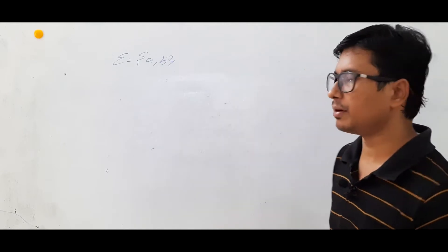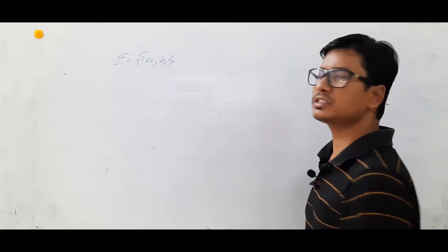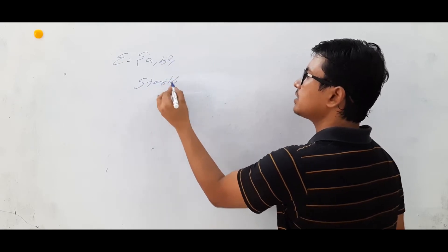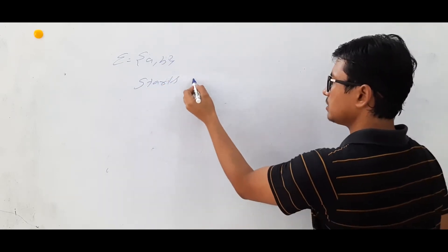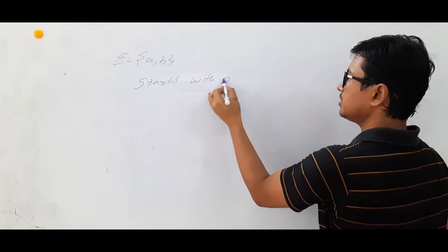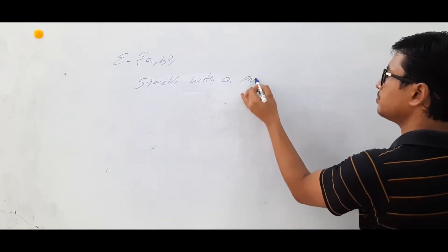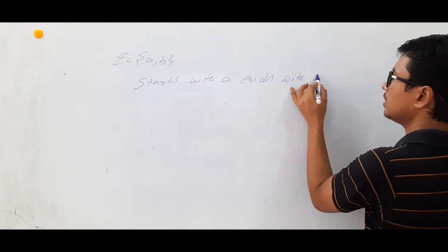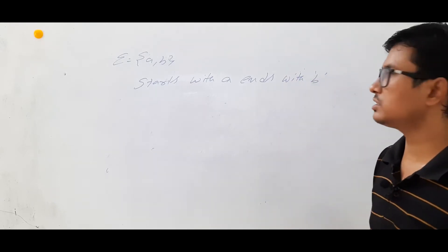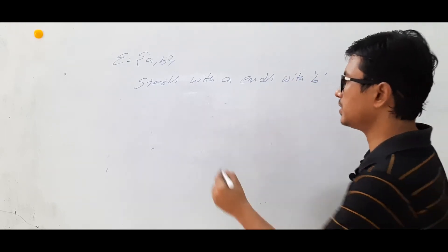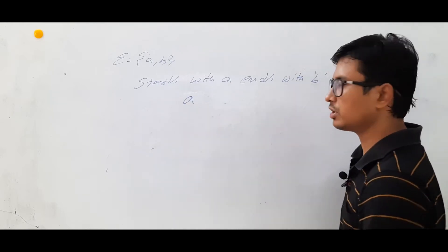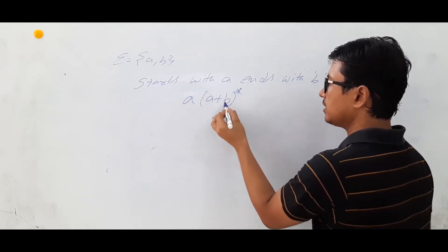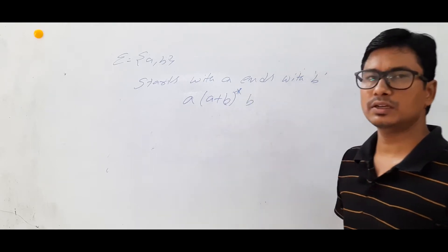We need strings over alphabet {a, b} that start with 'a' and end with 'b'. So the pattern is: it should start with 'a', in between it can consist of anything, and then it should end with 'b'. This gives us the regular expression for it.